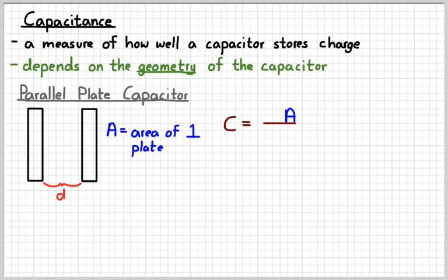The bigger the area, the more charge we can store on there. The closer they are together, the more charge we can store on there. And then the third factor is just the nature of space itself.